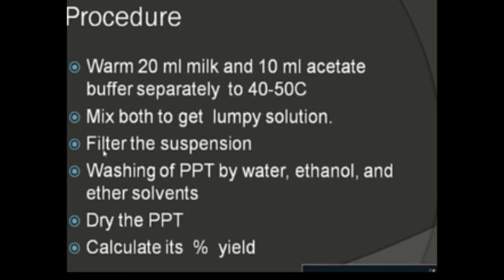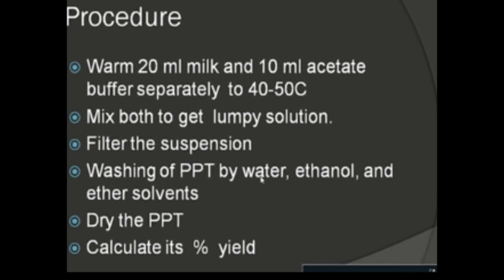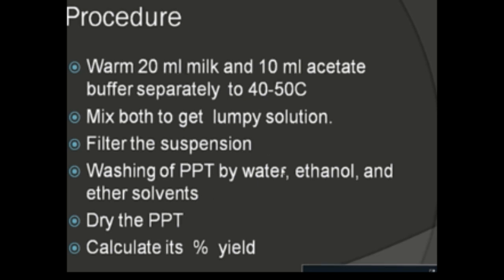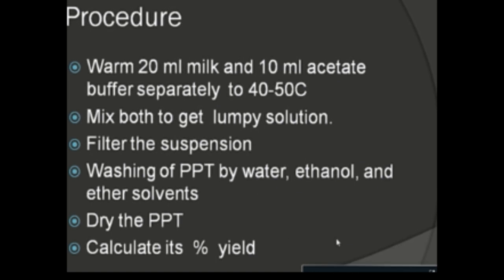Then filter the suspension; the residue remaining on the filter paper is the required casein. Wash the precipitates serially with solvents: water, ethanol, and ether. After washing, dry the precipitate to completely remove the solvents. Then calculate the percentage yield using the formula: divide the weight of precipitate obtained by the weight of sample taken, and multiply by 100.